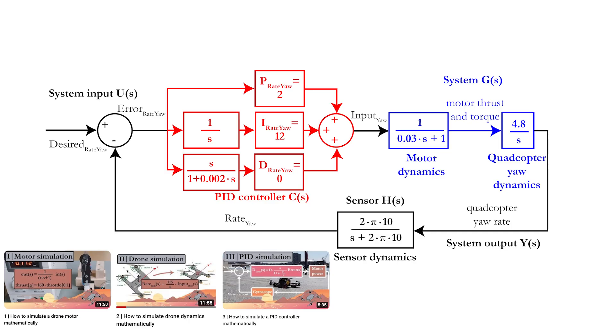For the yaw dynamics for example, we saw that the optimal P, I and D values were equal to 2, 12 and 0. In this video, we will mathematically calculate these values using the root-locus method.